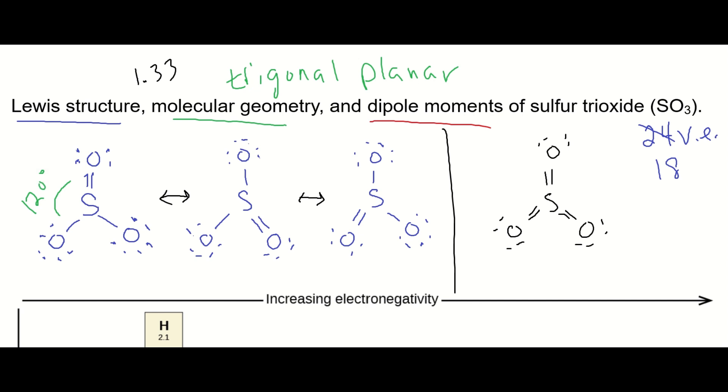And they'll have a bond angle of 120 degrees. Again, you don't have a double bond that's more repelling than a single bond. These are all resonating between each other, so they're all equivalent bonds. So we have a bond angle of 120 degrees.